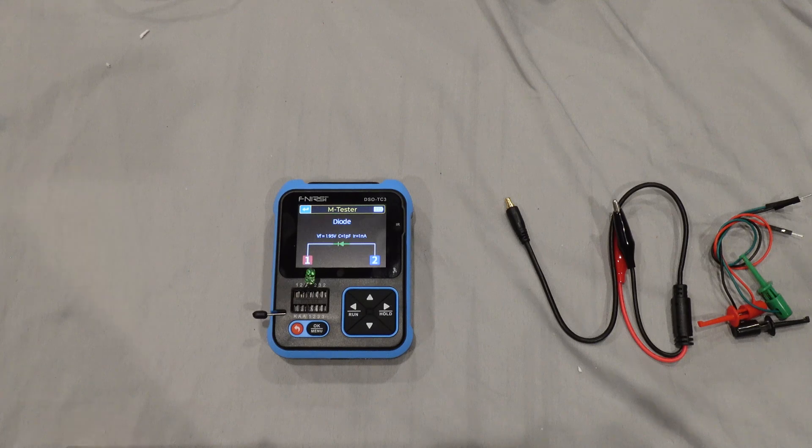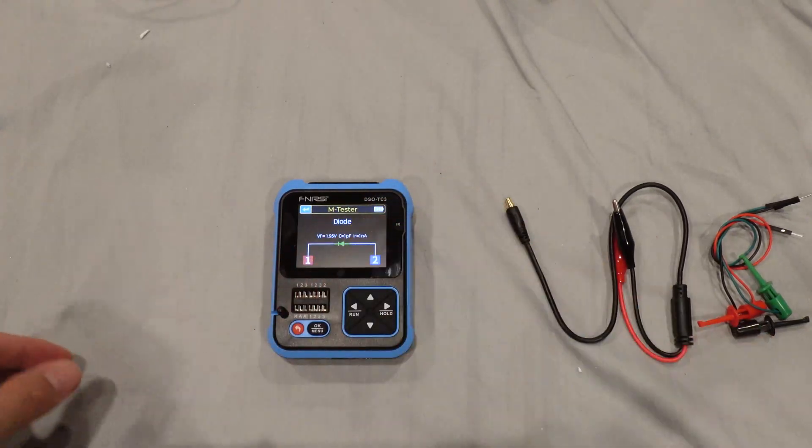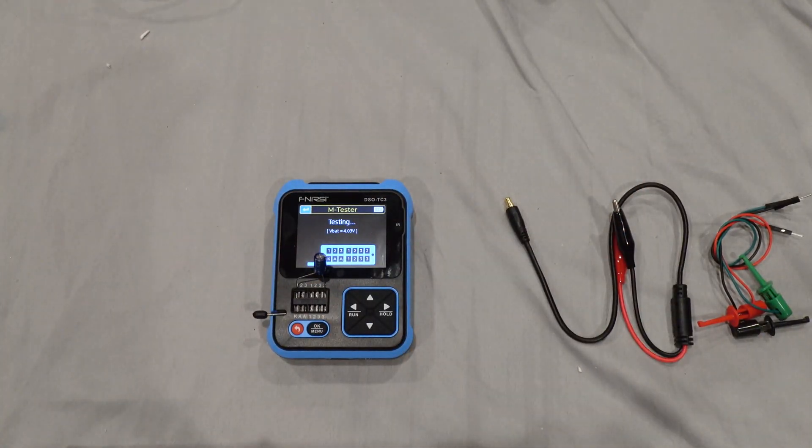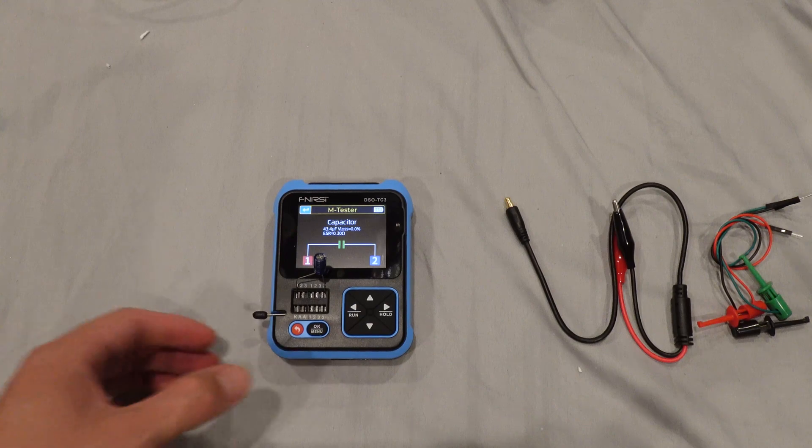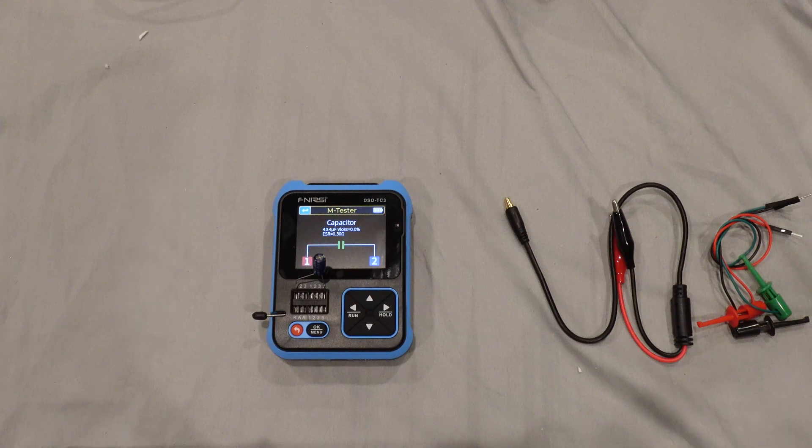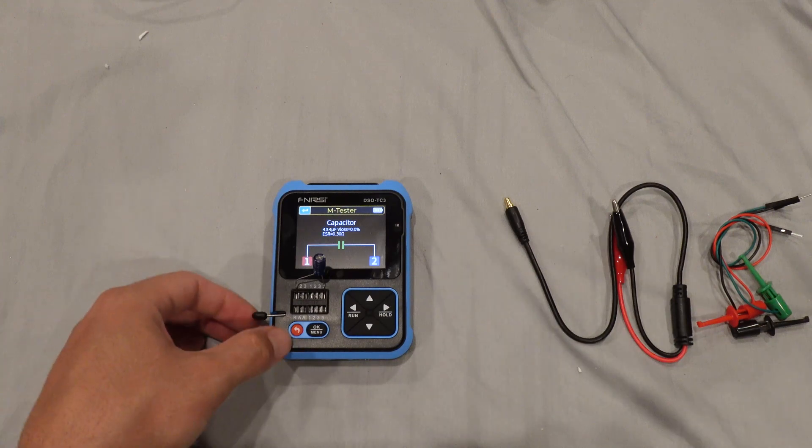So yeah, it shows that it is a diode. Okay, that works. Let's see what else we can try. It is testing. I think capacitor takes longer than the other components because of the charge and discharge. So yeah, it shows that it is around 43 microfarad, which is good, not bad.